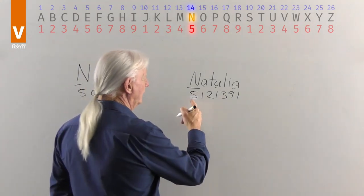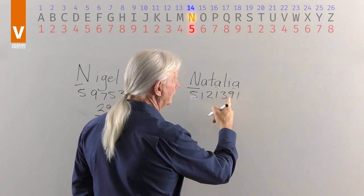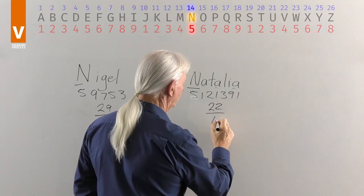On Natalia, 5 and 1 is 6, 7, 8, 9 and 3 is 12, 21, 22 and that's a 4.